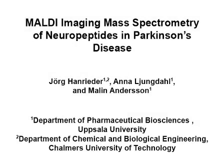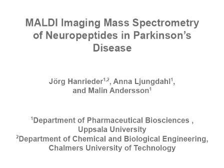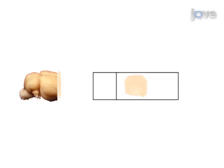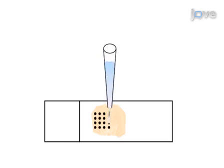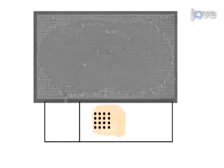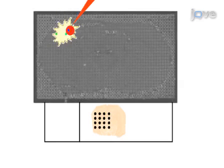The main aim of this procedure is to elucidate the spatial distribution of neuropeptides, specifically opioid peptides, directly in thin brain sections using MALDI imaging mass spectrometry. This is accomplished by first collecting 12 micrometer thin tissue sections of snap-frozen rat brain and thaw mounting them onto conductive glass slides. The second step is to apply MALDI matrix in arrays across the sections using a chemical inkjet printer and then acquire one mass spectrum from each matrix spot.